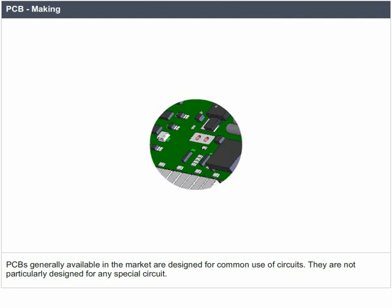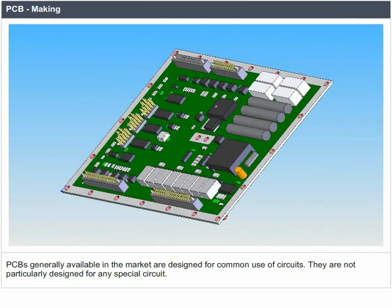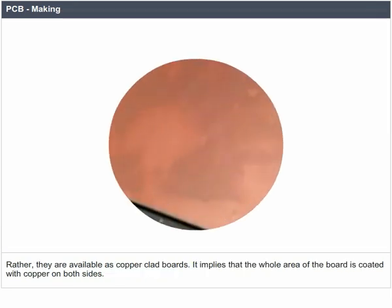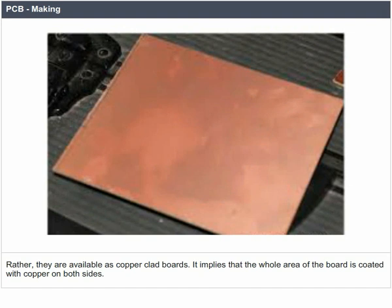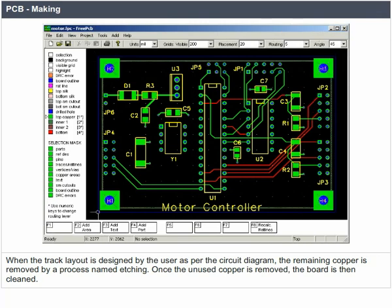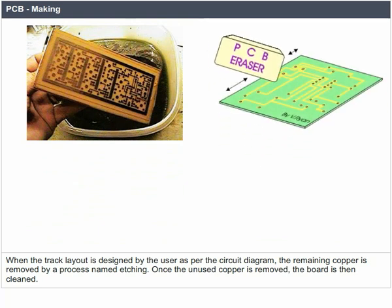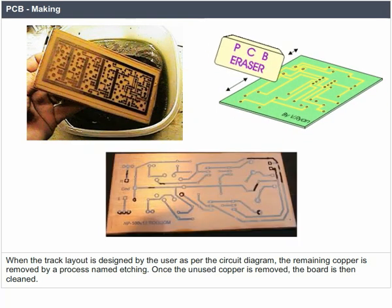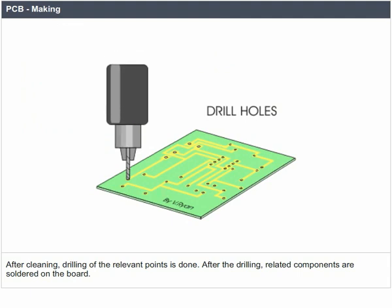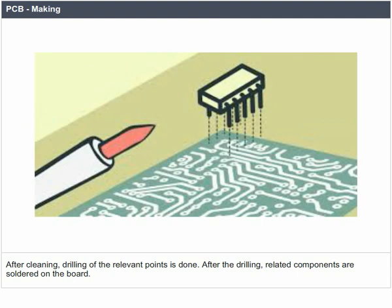PCB Making: PCBs generally available in the market are designed for common use and are not designed for any special circuit. Rather, they are available as copper-clad boards, meaning the whole area of the board is coated with copper on both sides. When the track layout is designed by the user as per the circuit diagram, the remaining copper is removed by a process named etching. Once unused copper is removed, the board is cleaned, then drilling of relevant points is done, and related components are soldered onto the board.